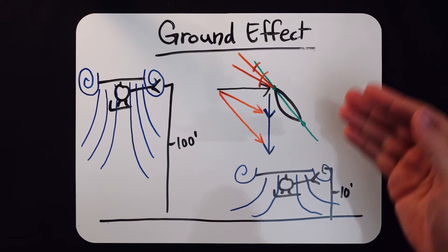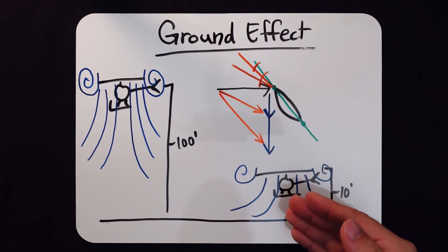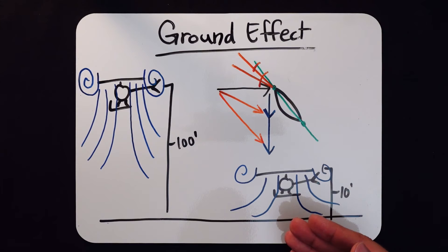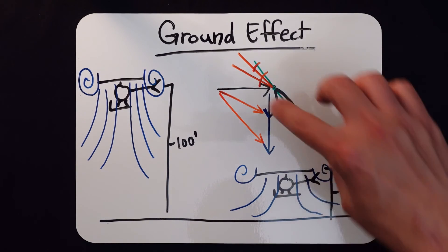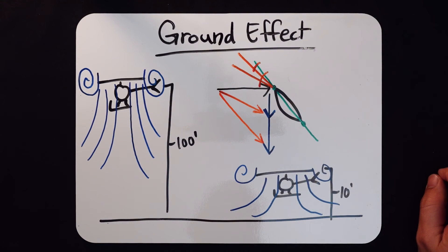Now, this is why for the same rotational relative wind, in ground effect, I don't need to pull as much pitch. I don't need to raise the collective as much to get the same amount of lift as I would out of ground effect.